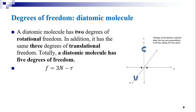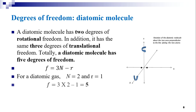Hence, we can calculate the degrees of freedom of a diatomic molecule using F = 3N − R. Here, N = 2 and R = 1. Then, F = 3 × 2 − 1 = 5. So the degrees of freedom for a diatomic molecule is 5.